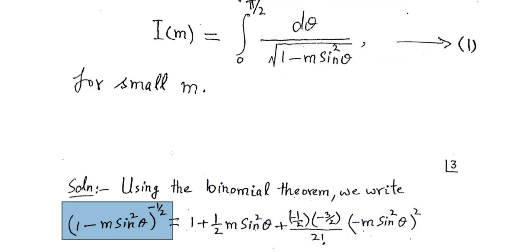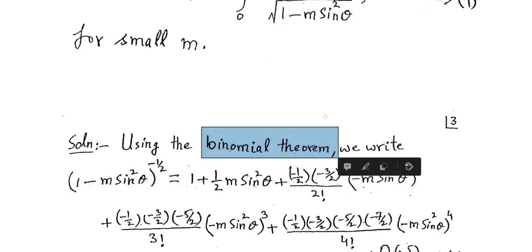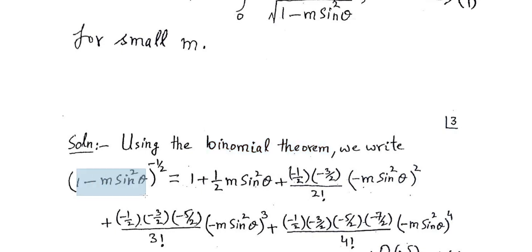The first task is to obtain the series form of (1 − m sin²θ)^(−1/2). For that we will use the binomial theorem. The binomial theorem applies to expressions of the form (1 + B) or (1 − B). Here we have the term (1 − m sin²θ) raised to the power (−1/2).